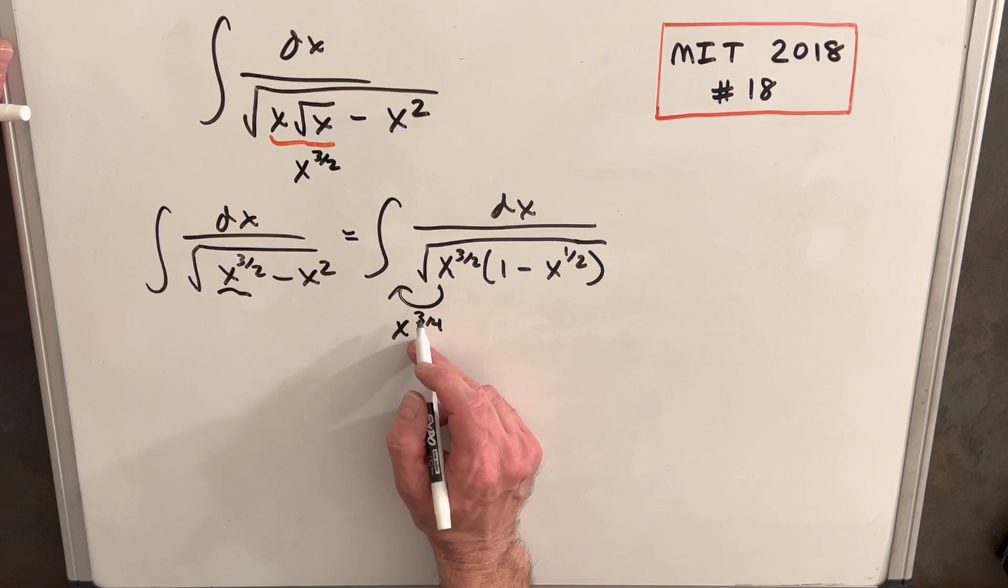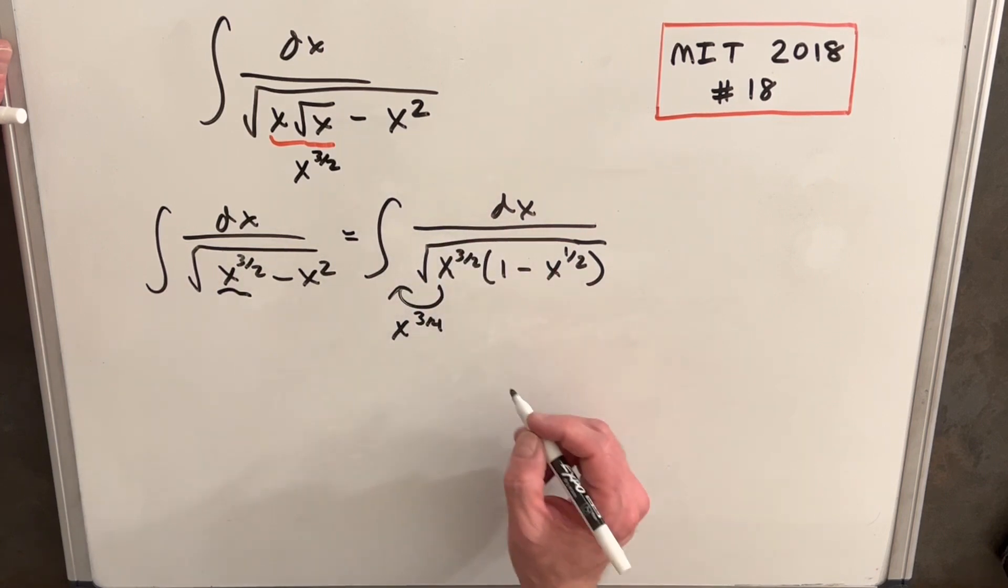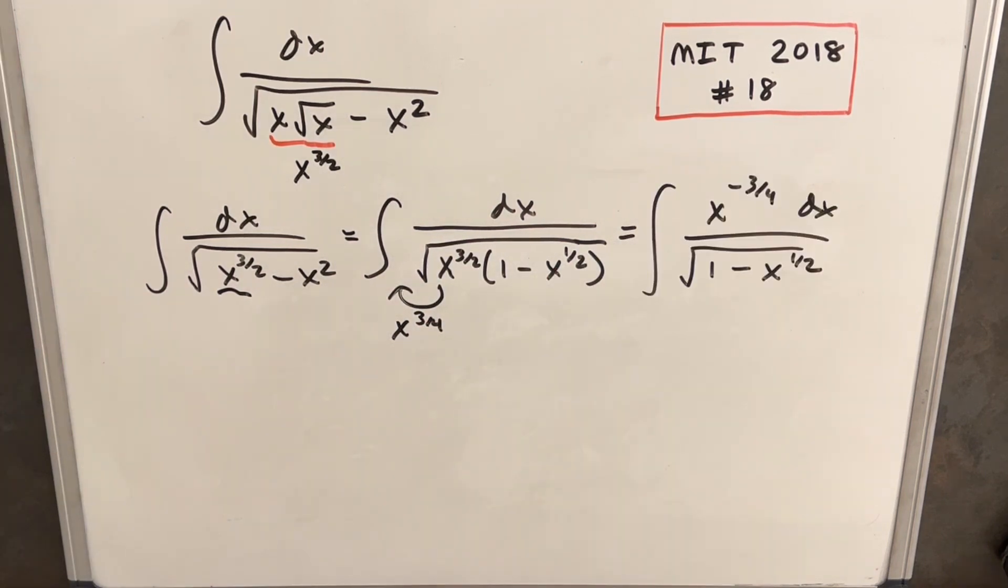Then when I'm going to rewrite this, I'm going to write this in the numerator as x to the minus 3 fourths, just like a reciprocal. Okay, then from here, now we're in much better shape to try a u substitution.